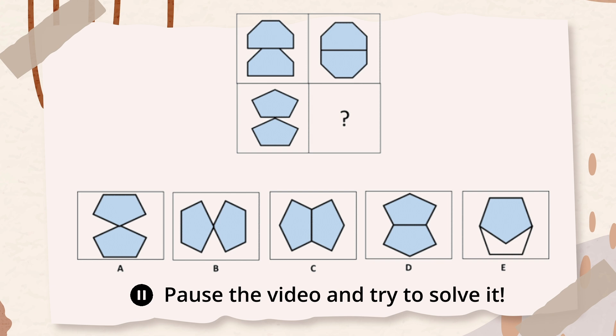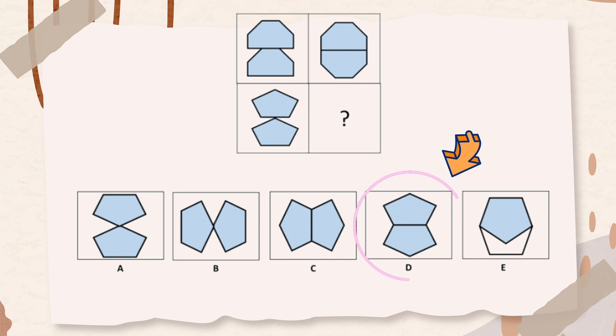Two similar shapes are placed on one another. The bottom shape flips vertically to form the shape in the next box. When the bottom shape flips, it will form a shape similar to the shape shown in option D. Therefore, the correct answer is option D.